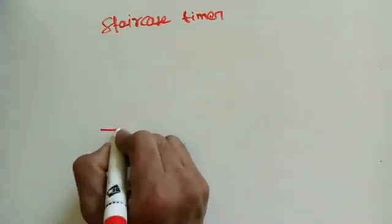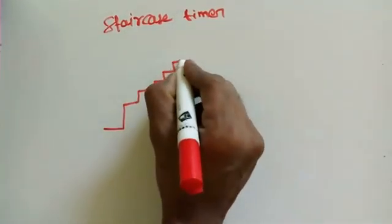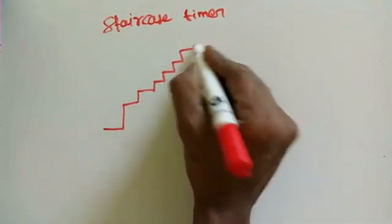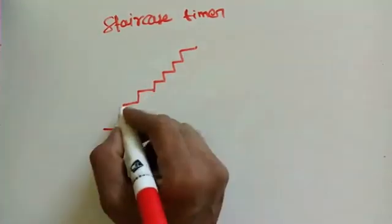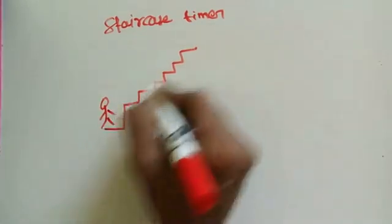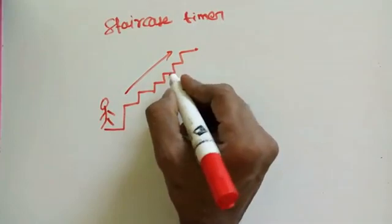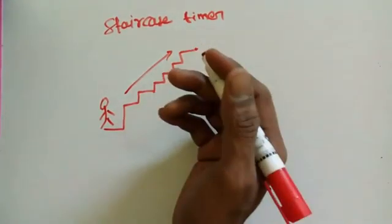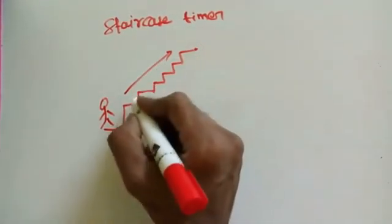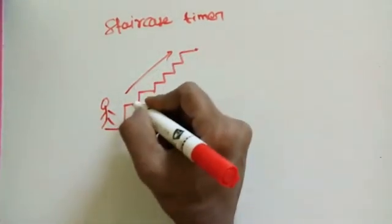For some applications, this is for steps. One person wants to go from here to here, to here. It takes some time, so he wanted some light to go this way.